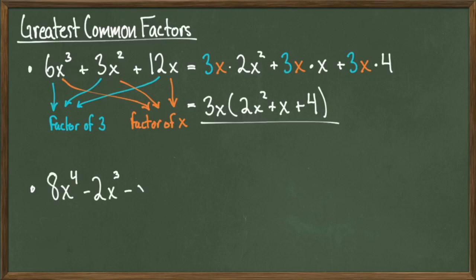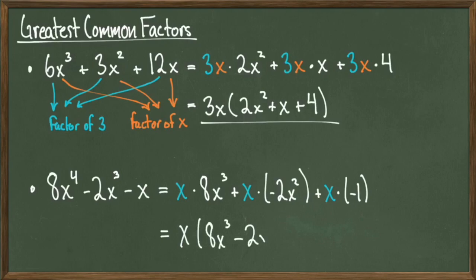Let's try this again with the polynomial 8x to the 4th minus 3x cubed minus x. Unfortunately, 2 is not a factor of every term because the coefficient of x is negative 1. But there is an x present in every term, so we can factor that out. Rewriting the polynomial in a similar way to what we did upstairs, we can factor out the x and leave behind 8x cubed minus 2x squared minus 1, and then we're done.